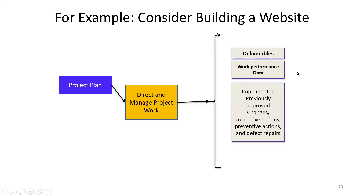In this process we also work on previously approved changes, corrective actions, preventive actions, and defect repairs. Corrective actions address issues where things aren't working — you send work for rework. Preventive actions ensure stories are understood properly and include team training. Defect repairs address any defects. These changes don't require a change request through the integrated change control because the baselines are not being changed.